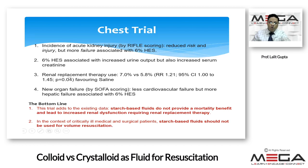The CHEST trial showed that although renal replacement therapy was higher with the HES group, new organ failure was also more with HES, and there was increased serum creatinine with HES compared to saline. Then another study came — the 6S HES study — a multicentric trial in patients with severe sepsis for fluid resuscitation in the ICU. They compared 6% HES with Ringer's acetate. The outcome was that fluid resuscitation with tetrastarches had an increased risk of death at 90 days and more likely required renal replacement therapy.